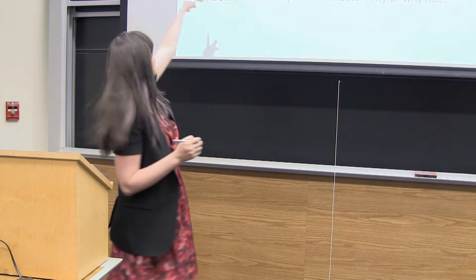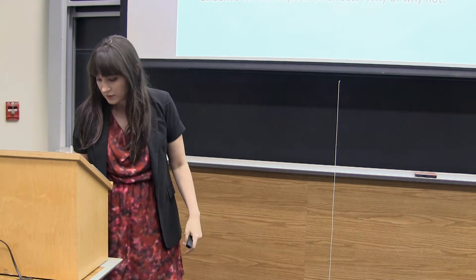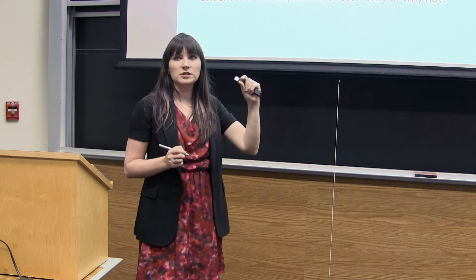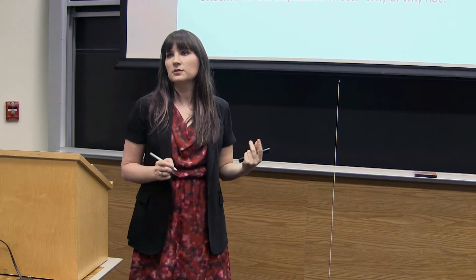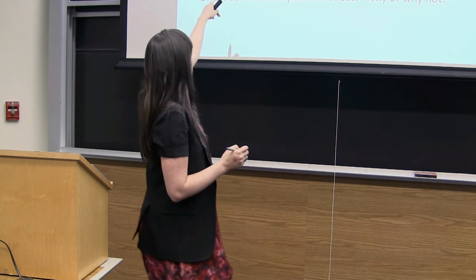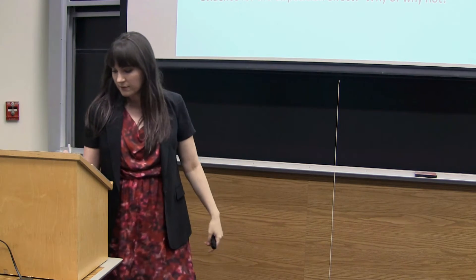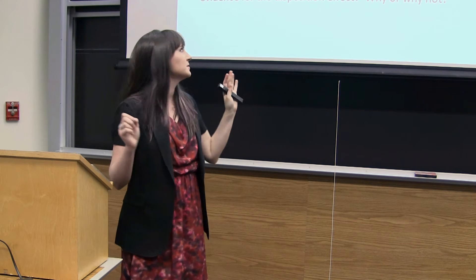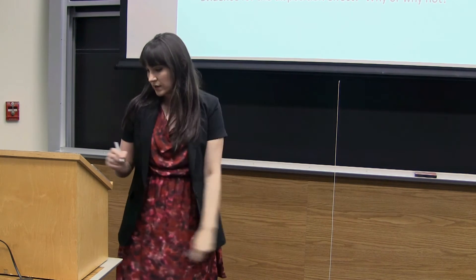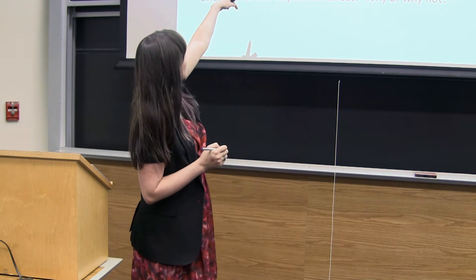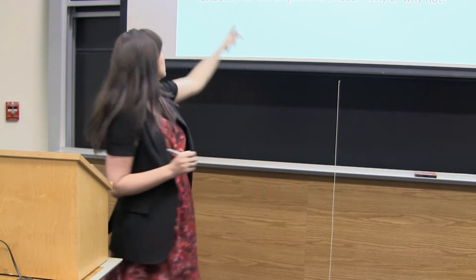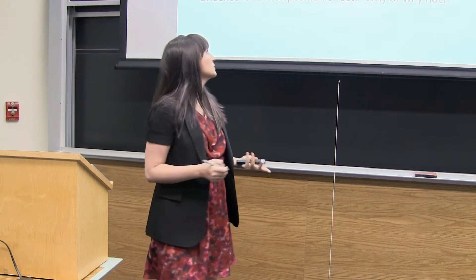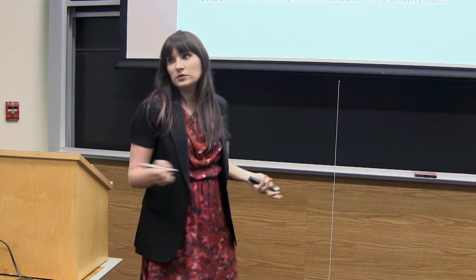Stock B: bought at 20, now at 22 — that's a winner. Notice we're not tracking by how much something is a winner or loser, we're just putting it into one of those two categories. Stock C: bought at 40, now at 45 — winner. Stock D: bought at 25, now at 28 — winner. Stock E: bought at 10, now at 8 — loser. Stock F: bought at 35, now at 40 — winner.